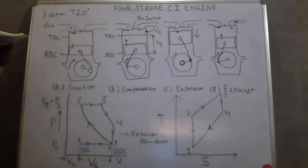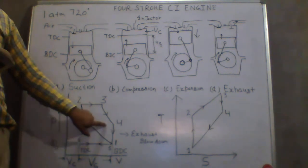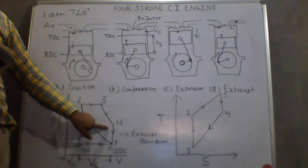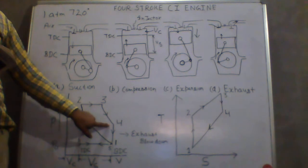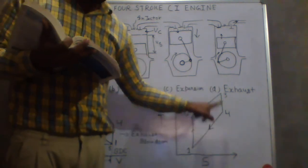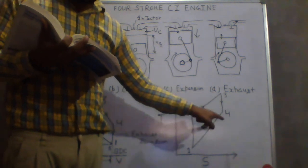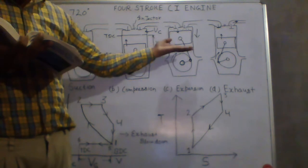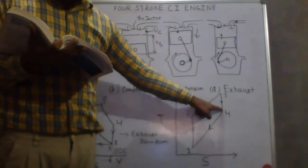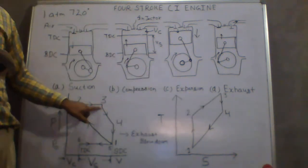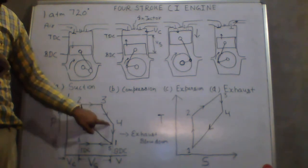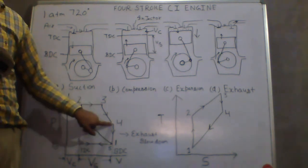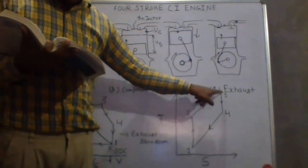The next process, 3 to 4, is the isentropic power or expansion stroke. From 3 to 4, entropy remains constant and temperature decreases as the piston moves downward during expansion. On the PV diagram, volume increases and pressure decreases from 3 to 4.